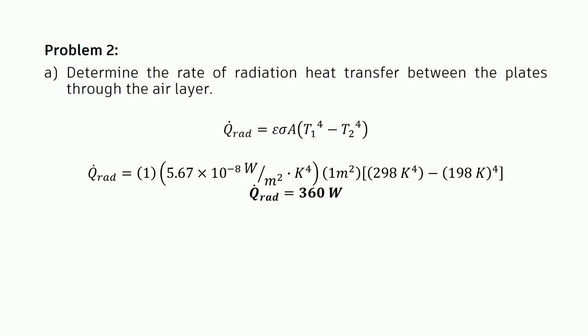our area is A = 1 m². We have the temperature difference: (298 K)⁴ - (198 K)⁴. Now we have the rate of heat transfer through radiation between the plates through the